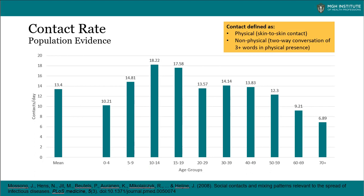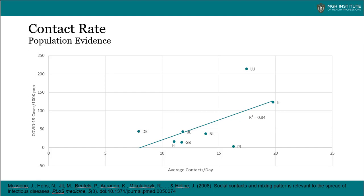What does a normal contact rate look like? The slide shows results from research done in eight European countries among nearly 8,000 people who were asked to keep diaries about their contacts. Those included physical contacts — skin-to-skin — and non-physical, which is defined as a two-way conversation of more than three words in the physical presence of the other person. The average number of contacts was 13.4, and there was substantial variation by different age groups.